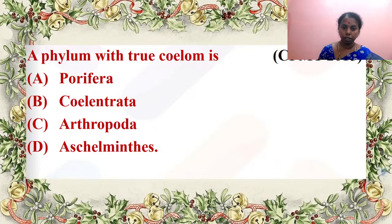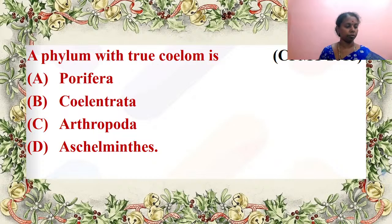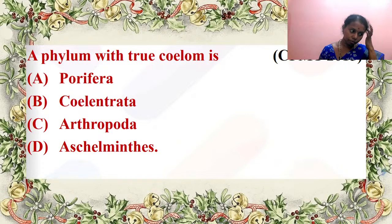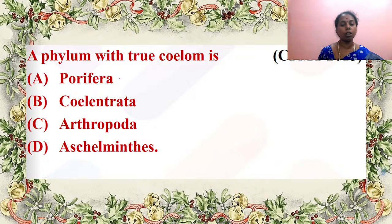The phylum with true coelom is dashed — is it Porifera, coelenterata, Arthropoda, or Aschelminthes? Porifera and coelenterata do not have coelom, and aschelminthes are pseudocoelomate. Arthropoda is the phylum where we have true coelomates. Excellent answer by Parthas Arati and Arini Shree.